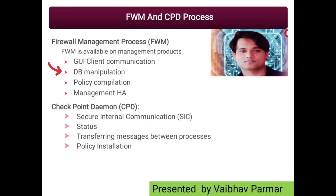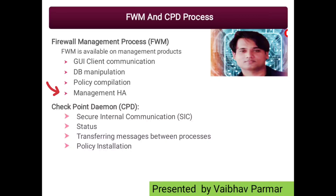The second function is DB manipulation — database manipulation — which includes all actions performed on the management server such as object creations, rule creations, user creations, etc. Number three: policy compilation. FWM handles the policy compilations that are later applied to network traffic during the inspection process. Management HA sync — the sync management is also handled in management high availability.